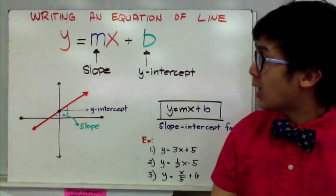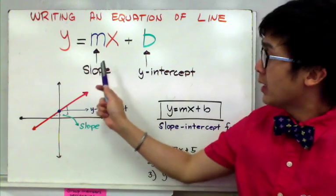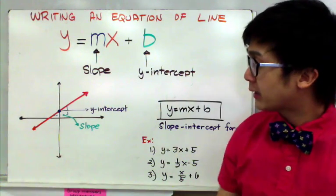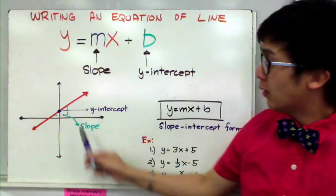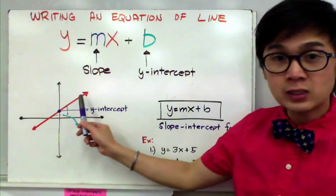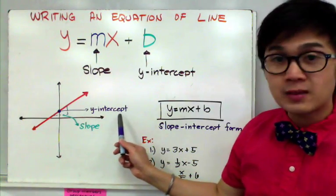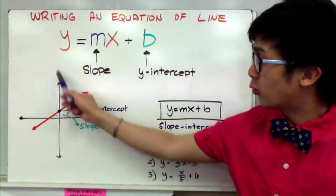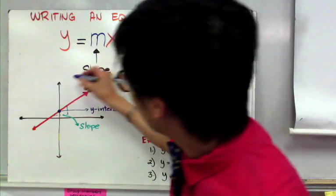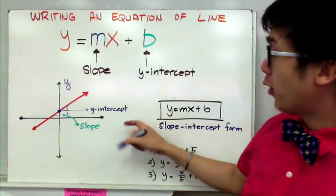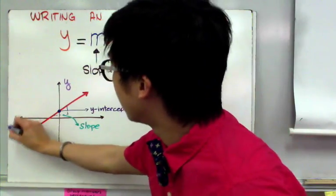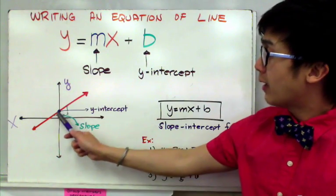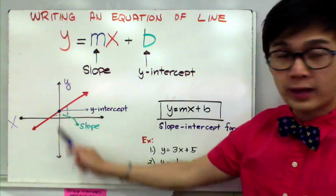Every linear equation has its slope and its y-intercept. Graphically, in this particular example, we have a line, and the y-intercept from the word itself is basically the point of intersection of your given line and the y-axis. Your y-axis is your vertical line and your x-axis is your horizontal line. Since we're only looking for the y-intercept, we are working on the point of intersection of your given line to the y-axis.